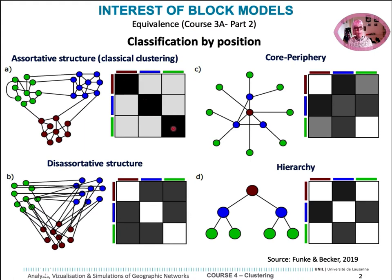With block models, we can also underline a sortative structure that maximizes connection between the groups, leaving the diagonal empty and maximizing the interconnection between the groups.